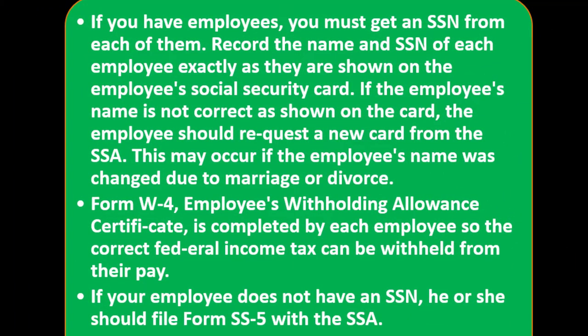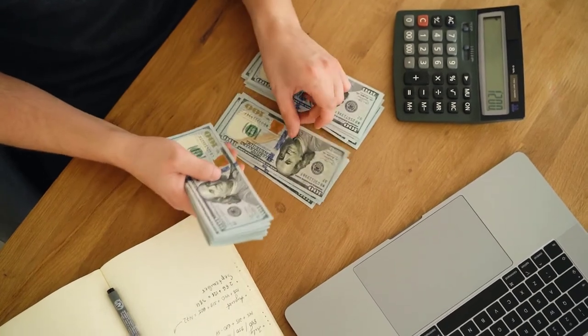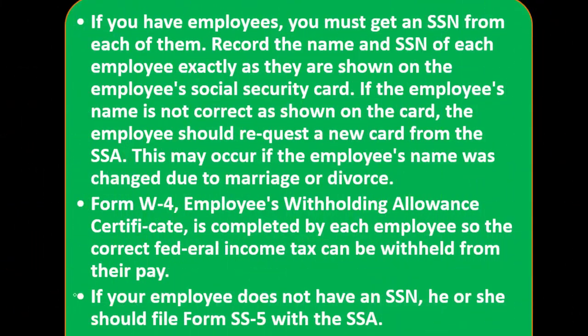If you have employees, you must get an SSN from each of them. Record the name and SSN of each employee exactly as shown on their social security card. If the employee's name is not correct as shown on the card, the employee should request a new card from the SSA — this may occur if the name was changed due to marriage or divorce. Form W-4, Employee's Withholding Certificate, is completed by each employee so the correct federal income tax can be withheld. If your employee does not have an SSN, they should file Form SS-5 with the SSA.